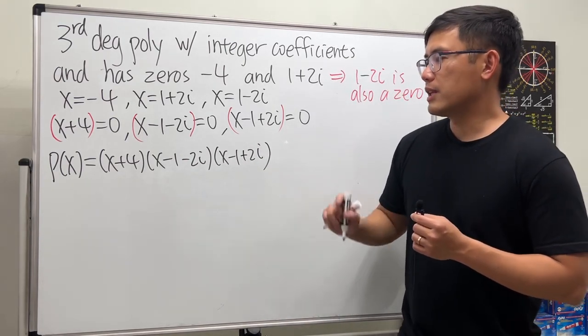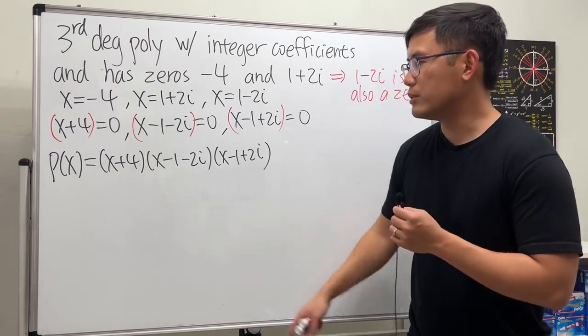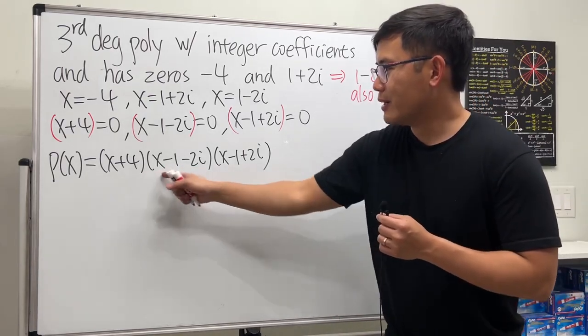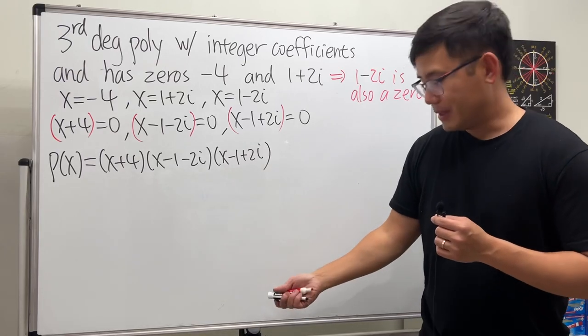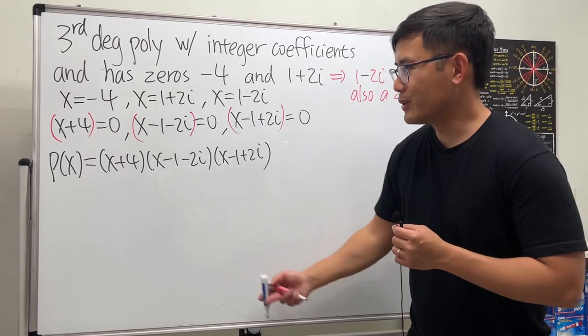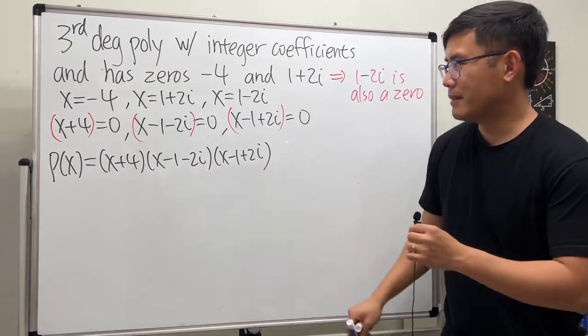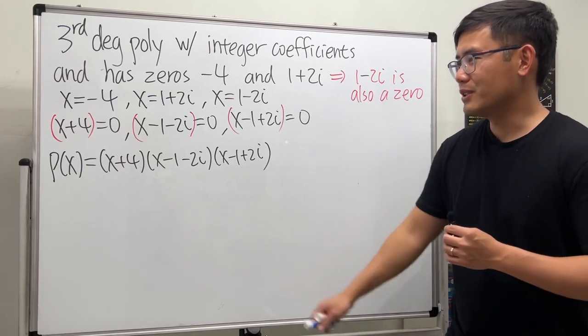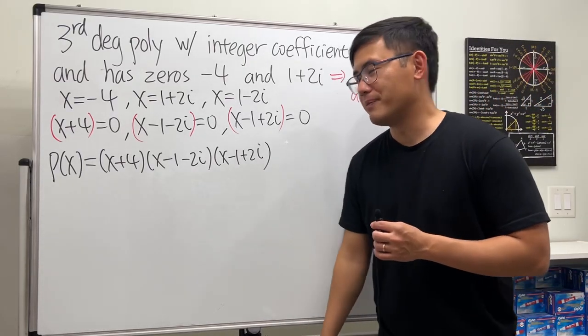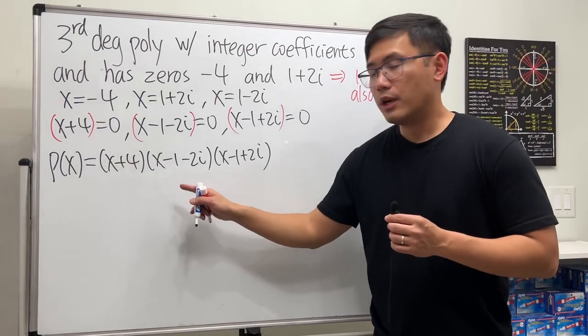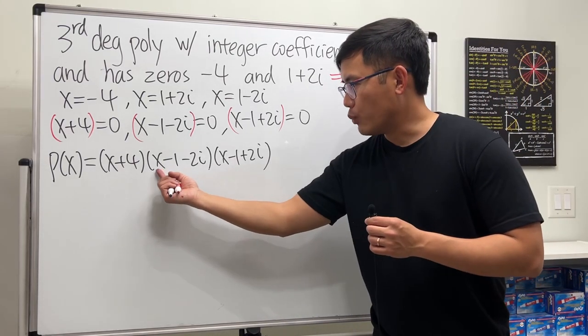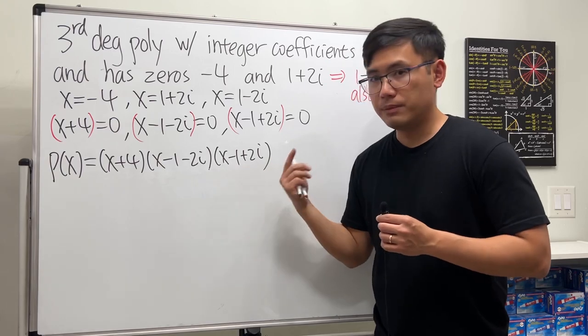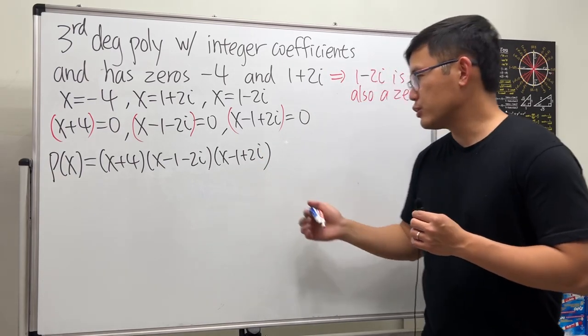Whenever we're doing these questions, I highly recommend you multiply the terms with complex numbers first, because you don't want complex numbers going over too many times. Just multiply them and you'll see they will disappear.